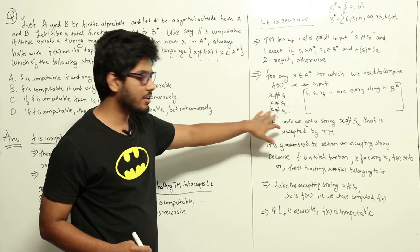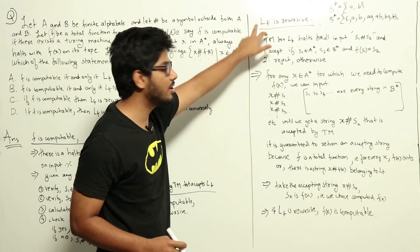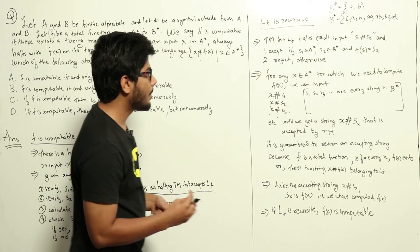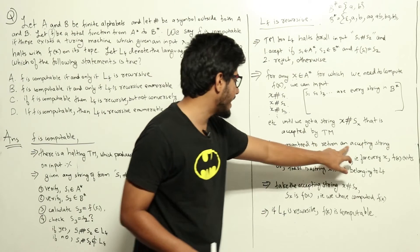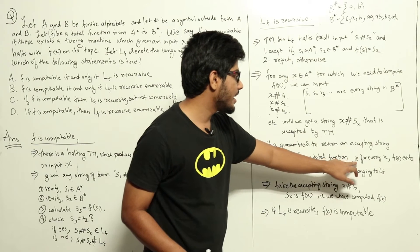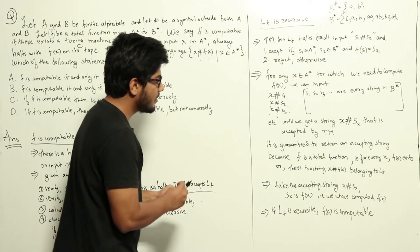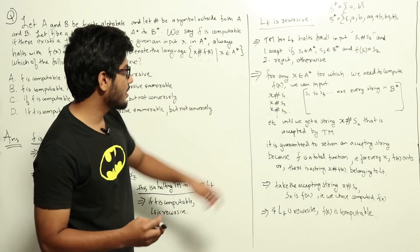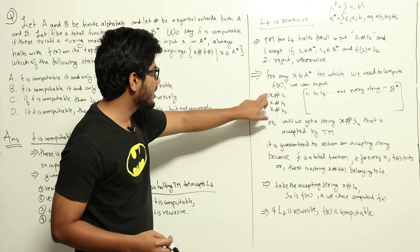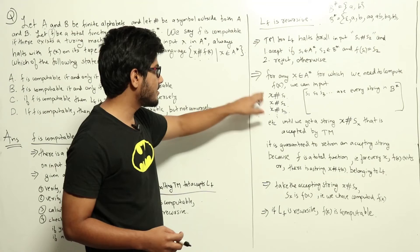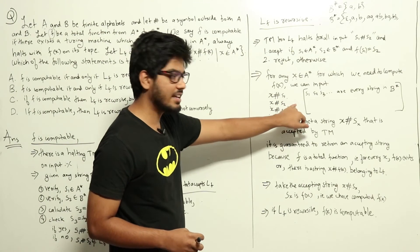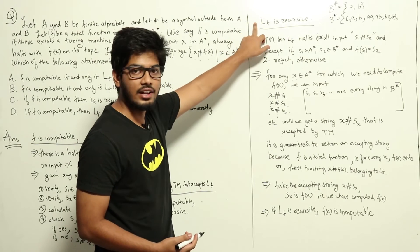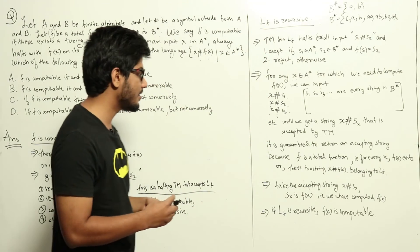Most of these strings won't belong to Lf and the machine will halt and reject, until we find a string x hash sx that is accepted. It is guaranteed to find an accepting string because f is a total function — for every x there is an f(x) that exists, which means there is a string x hash f(x) belonging to Lf. So there will always be some sx in b-star equal to f(x) for which this Turing machine will halt and accept.